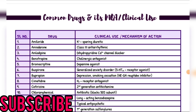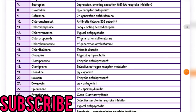Next portion is common drugs and their mechanism of action and clinical uses. Amiloride: potassium-sparing diuretic. Amiodarone: class 3 antiarrhythmic. Amlodipine: dihydropyridine calcium channel blocker. Benztropine: cholinergic antagonist. Bromocriptine: dopamine agonist. Buspirone: generalized anxiety disorder. Bupropion: depression, smoking cessation. Cimetidine: H2 receptor antagonist.